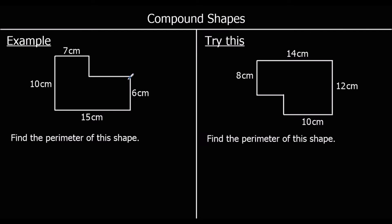Do we know every length that makes up the outside of the shape? There are two we don't know, so we can work them out. We've got 10 cm all the way down the left of the shape and 6 cm on the right — the total left is going to equal the total right. So 10 take away 6 is 4 cm. And this missing length: the total bottom is 15, which equals the total top, so 15 take away 7 is 8 cm.